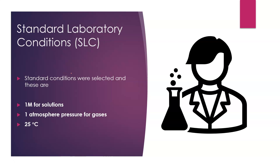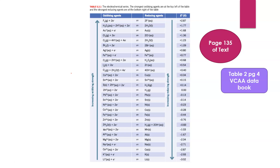Obviously, if we're outside of these conditions there could be some variation in the order observed. This is a copy of the electrochemical series from your textbook — you should become very familiar with it. You don't have to memorize it; you're also given it in your data booklet on page four, table two. This is an incredibly important table for you to be able to navigate.